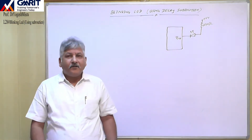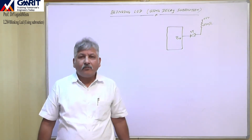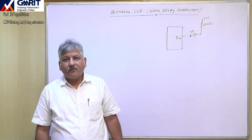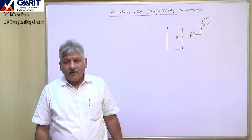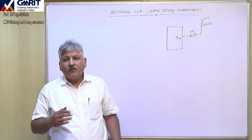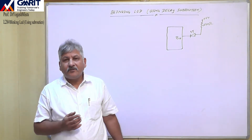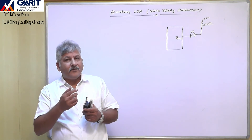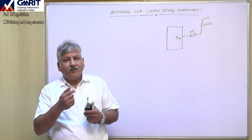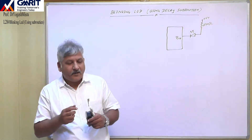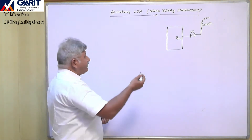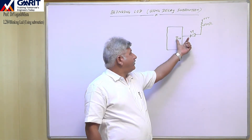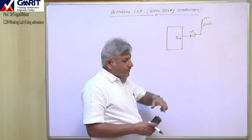In the last lecture we discussed how to generate delay with the help of some instructions. Now we will use those instructions with our main program of blinking an LED. Here we have one LED connected to pin number port 1.0.